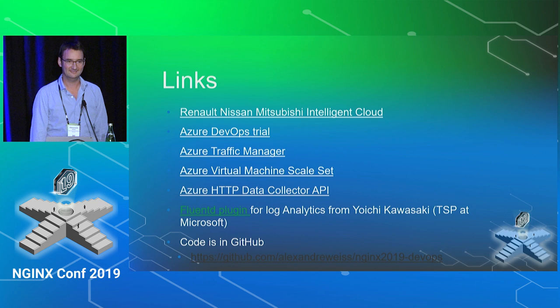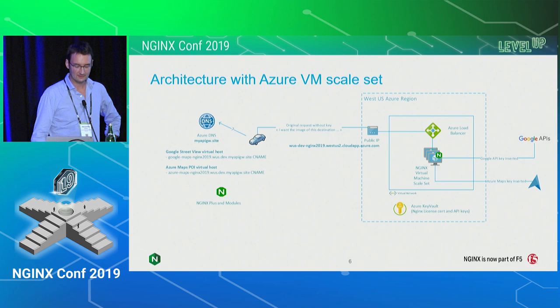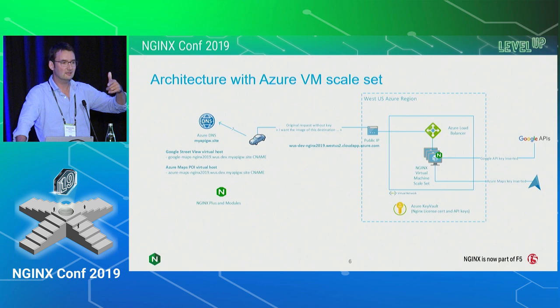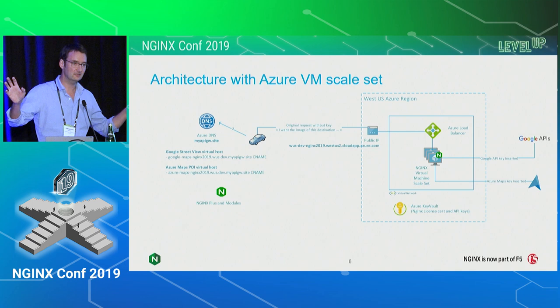Quick question on the architecture — it looked like Nginx was running in the car to do the mutual TLS work. Is that accurate? No, in the car you have a client certificate and you do mutual authentication on the Nginx server in the cloud. So another device is essentially managing traffic going up to your different cloud endpoints, with mutual TLS per car. Yes — there is provisioning in the car done by the manufacturer, and on the server side we expose certificates that also come from the car manufacturer. It's a classic PKI system.